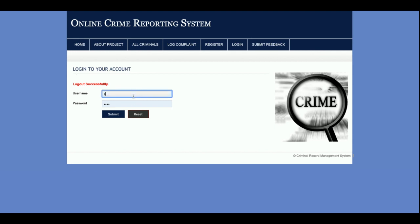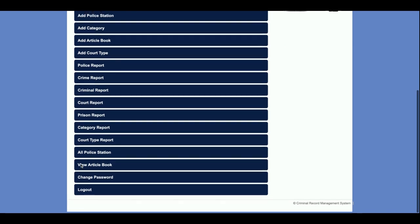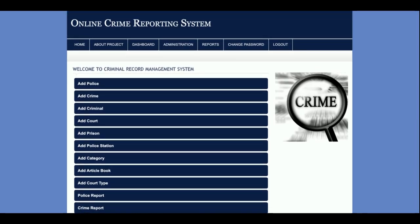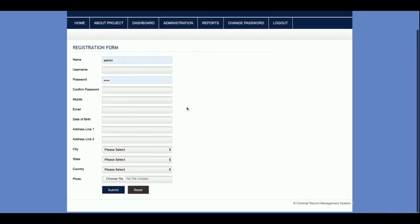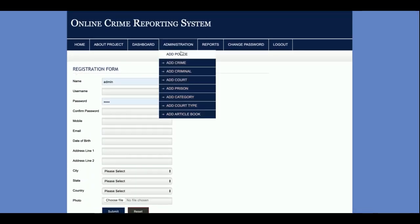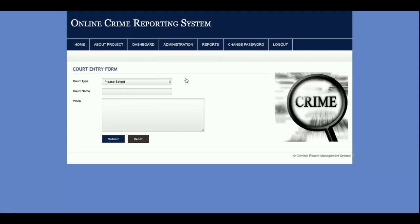The last user is the admin. Once you log in as admin, you see the dashboard. Most functionality is the same as the police user, but the admin can also add police users — something police users cannot do. From 'Add Police,' you can add a new police user. The admin is a super admin and has access to add crime, add criminal, and additional dropdown options such as prison and code type on the Add Criminal form.